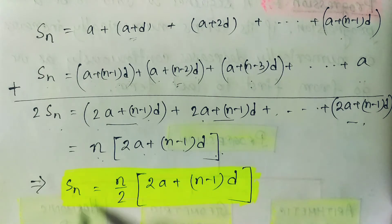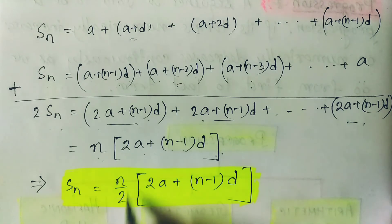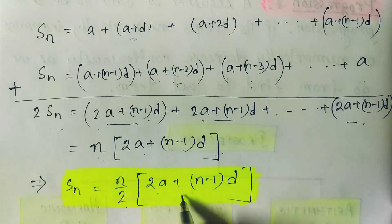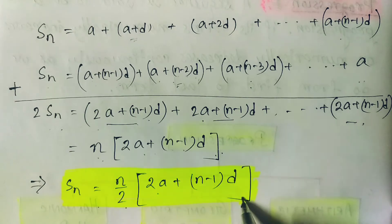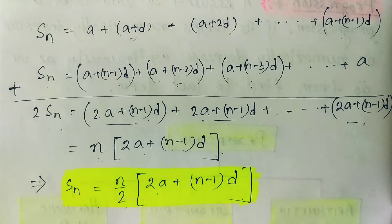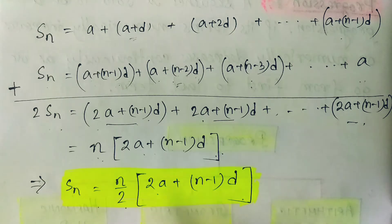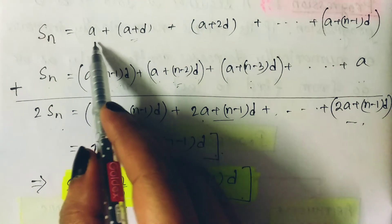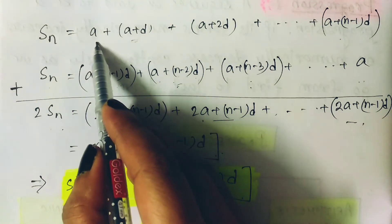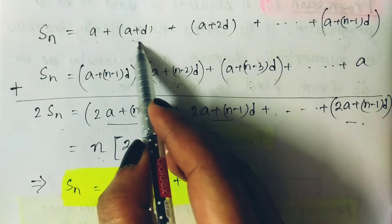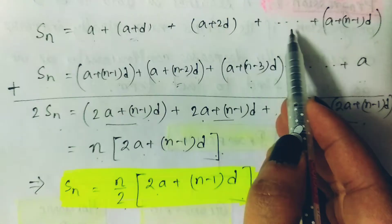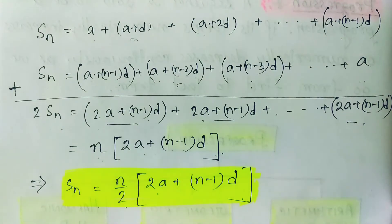Hence, Sn equals n by 2 times (2a plus (n minus 1)d), which is our summation formula for the given AP, where the AP has the terms a, a plus d, a plus 2d, a plus 3d, and so on.